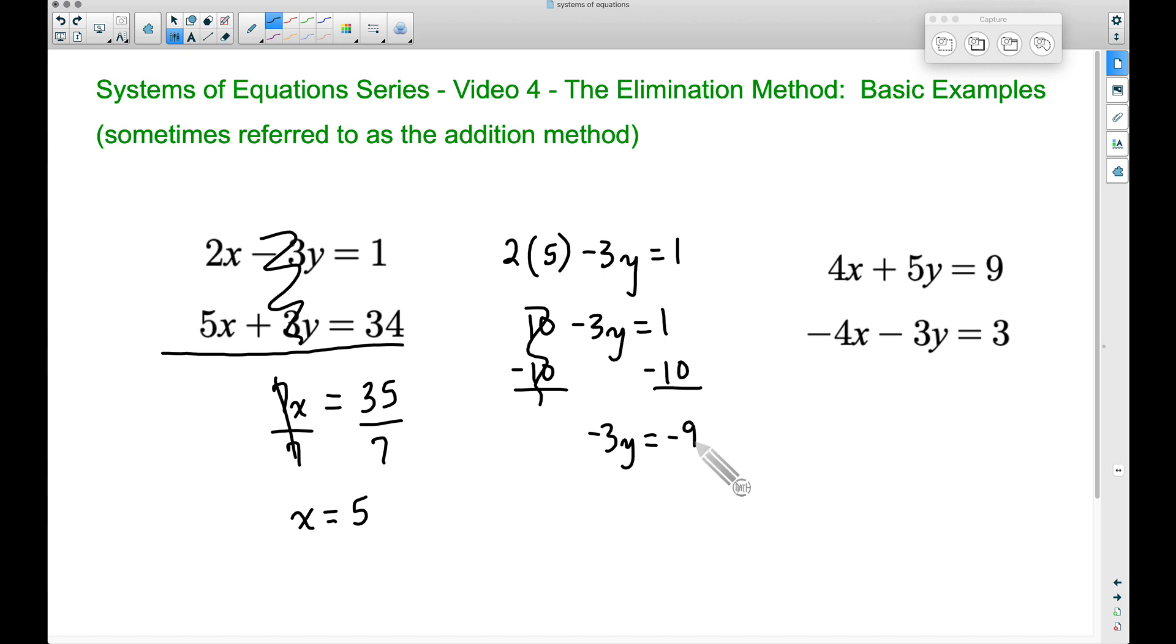Now we can divide both sides by negative 3 to get y by itself, and therefore we have y equals negative 9 divided by negative 3, which is a positive 3.